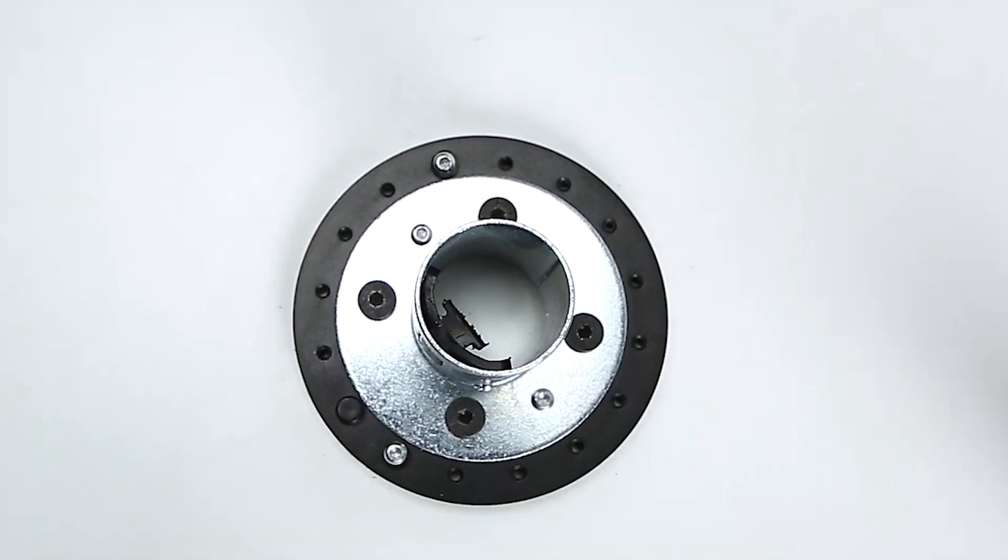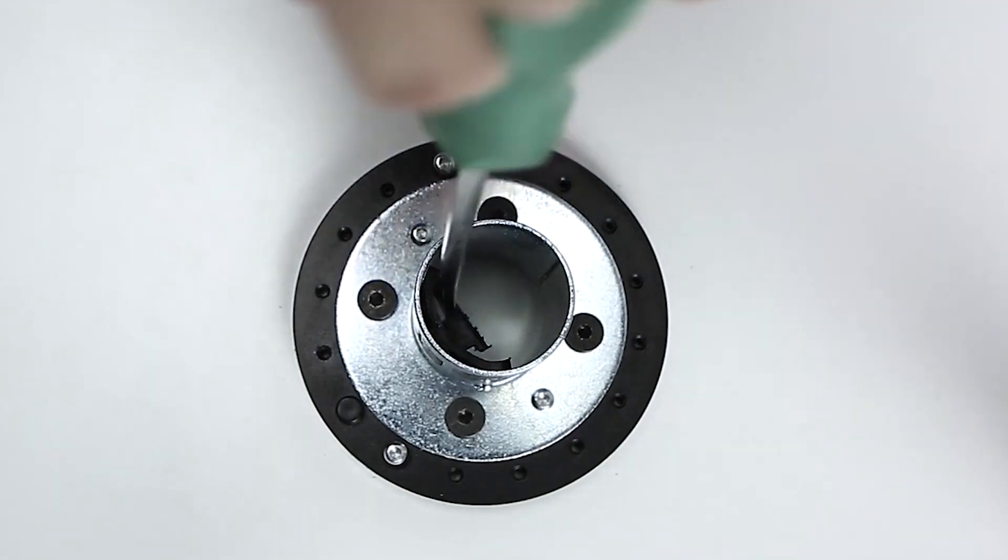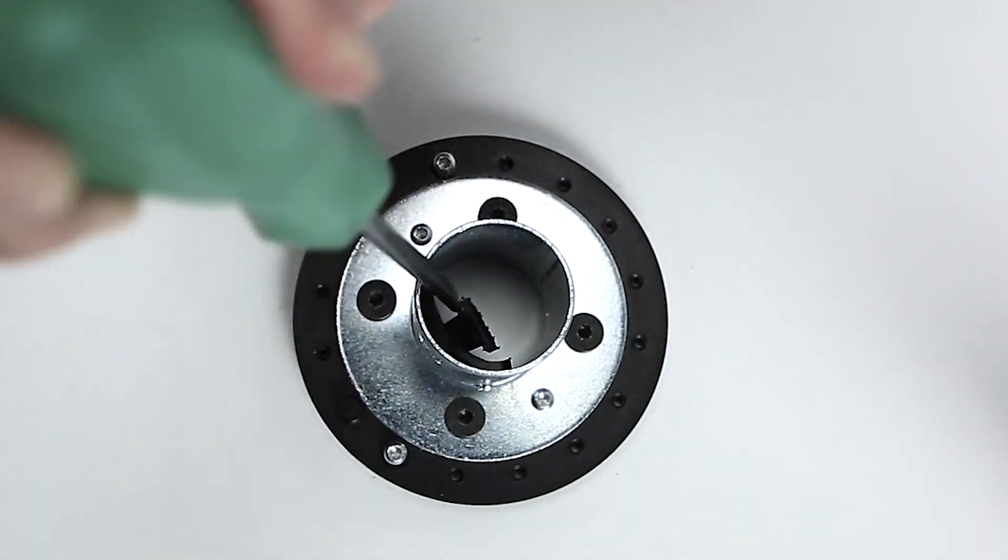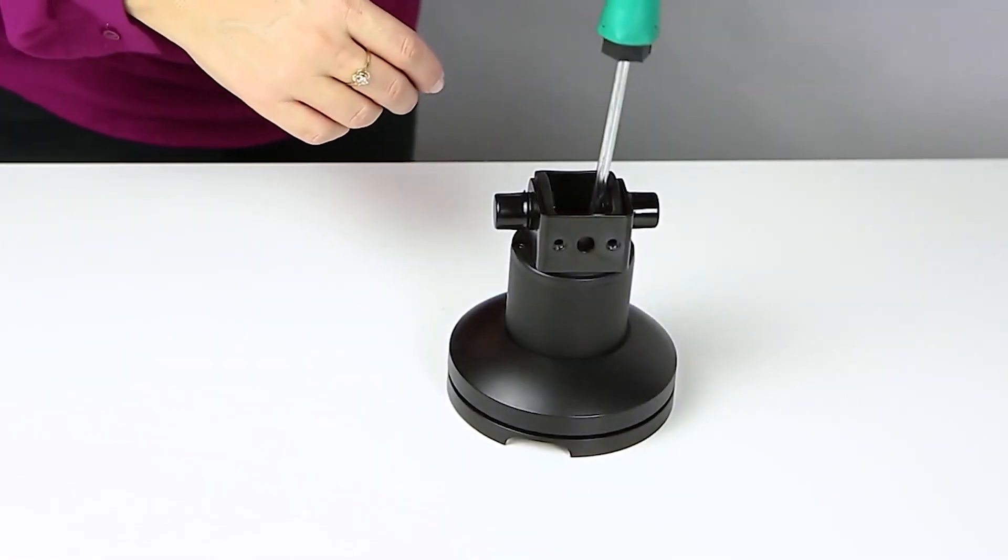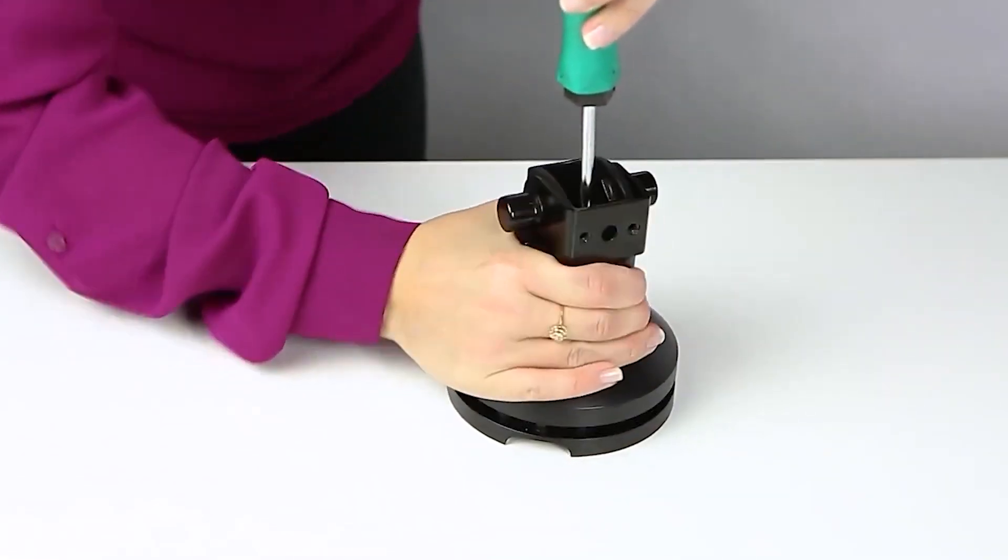Step 3B. Releasing Mount. Locate the release tab inside the mount. Using a flat head screwdriver or similar tool, pull back on the tab. With the tab pulled back, lift upon the upper portion of the mount to release.